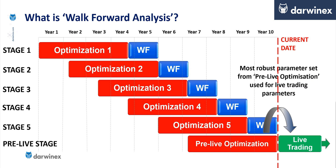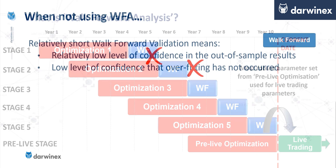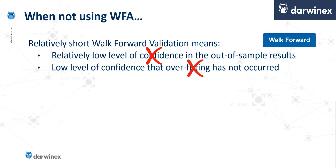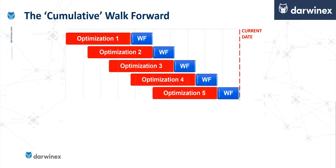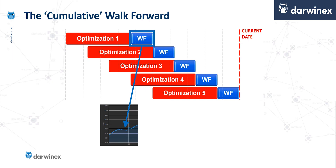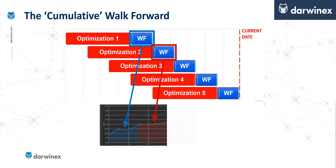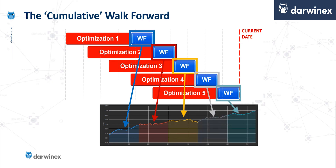So let's now go back and look at the issues that were inherent with the traditional approach. First of all, we had a relatively short walk-forward validation phase, which caused issues in terms of statistical significance and the confidence we could have in those results. However, look what happens when using walk-forward analysis. Here each walk-forward phase produces its own part of the walk-forward equity curve, and by combining the results from each of those walk-forward phases into a single out-of-sample equity curve, you can see that the cumulative size is far bigger than previously.